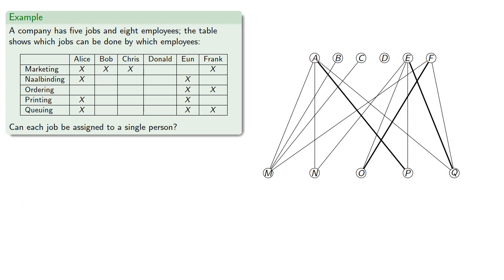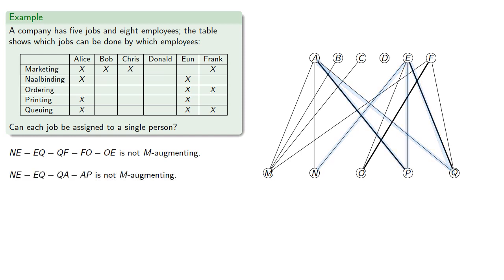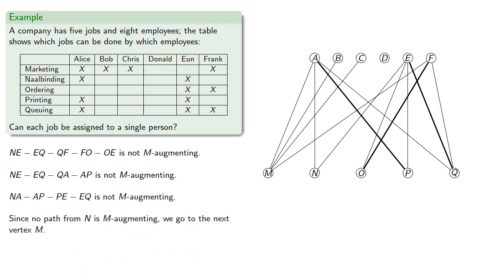If we start at N, we find, well, that's not M-augmenting. We could try, and still not M-augmenting, and we try out other paths from N. And since no path from N is M-augmenting, we go to the next vertex, M.